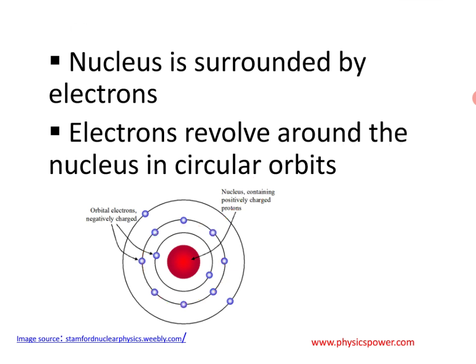So the electrons, which carry negative charge, exist inside the atom this way. An attempt was made to picture this model and explain it. But even in this explanation, there are drawbacks.